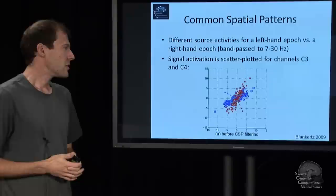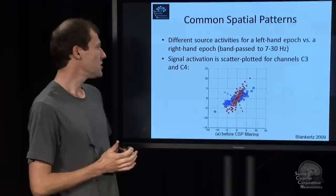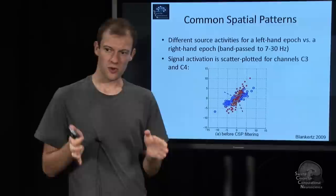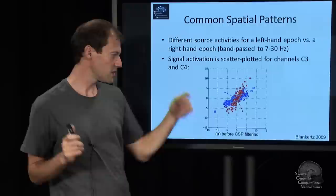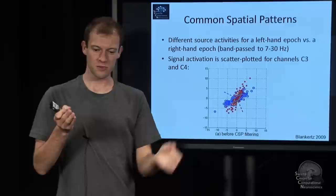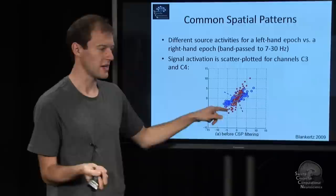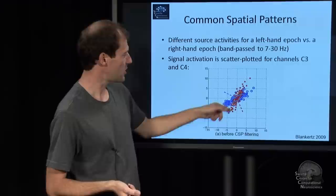So here's what this algorithm does just geometrically. Say you take a single trial of a person imagining a left-hand movement, and you just scatter plot the signal for two channels. So say this is C3 channel here, and this is C4 channel here. So you take every sample in this two-channel time series and plot the excursion for one channel here, and the excursion for the other channel in the other axis. What you then get is some kind of a scatter plot.